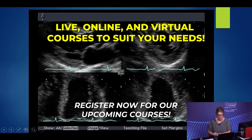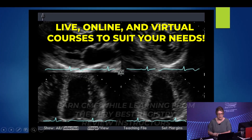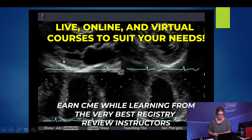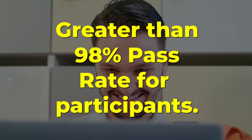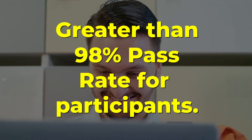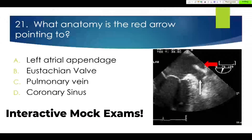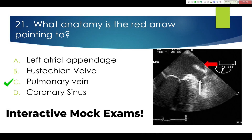Here are your images. Know the four images that we take for stress echo, and make sure you know your wall segments. They may tell you to click on your inferior wall and ask what anatomy a red arrow is pointing to. The white arrow is your left atrial appendage, and right above that is your pulmonary vein.